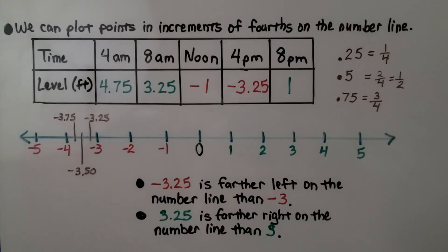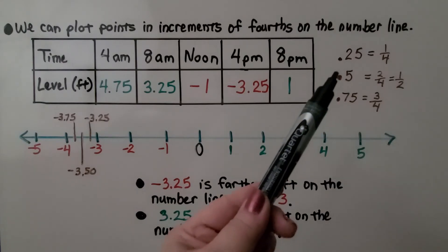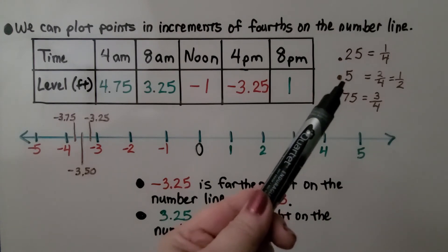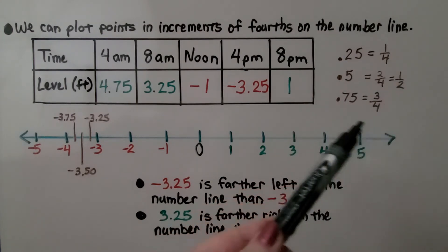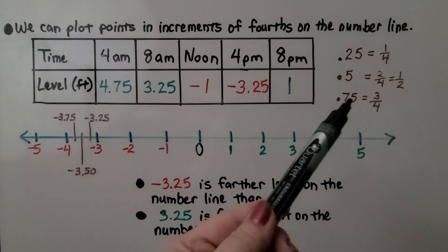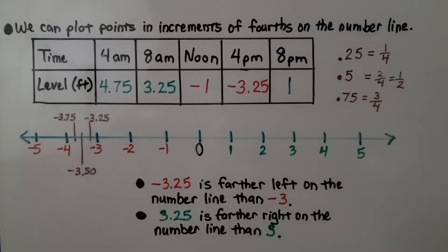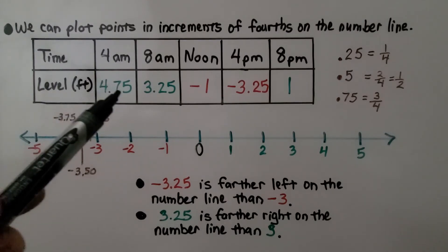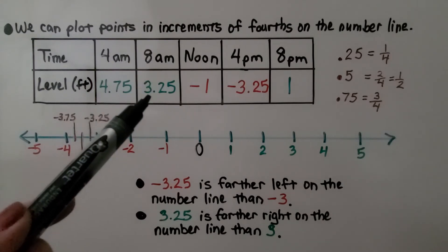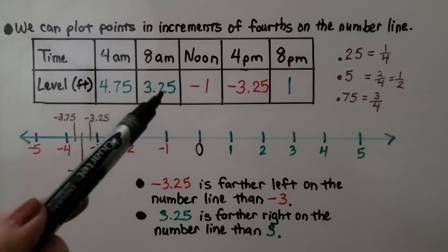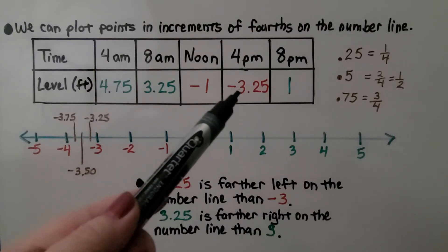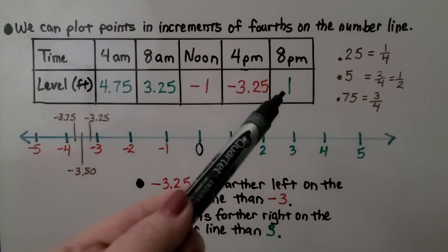We can plot points in increments of fourths on the number line. If we saw 25 hundredths, that's 1 fourth. If we saw 5 tenths or 50 hundredths, that's half. And if we saw 0.75 — 75 hundredths — that's 3 fourths. At 4 a.m. it was 4 and 75 hundredths, which is 4 and 3 fourths. At 8 a.m. it was 3 and 1 fourth. At noon it was negative 1. At 4 p.m. it was negative 3 and 1 fourth. At 8 p.m. it was at 1.